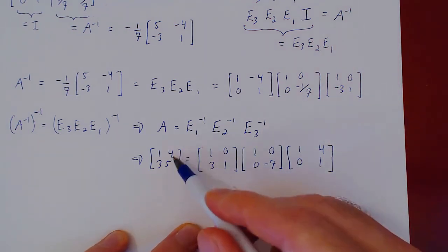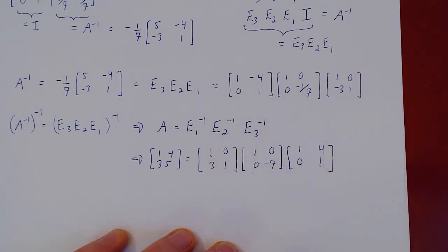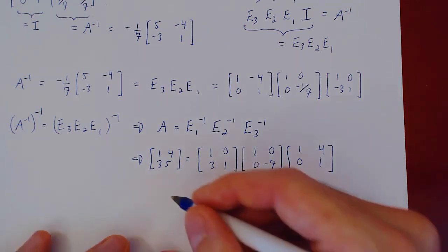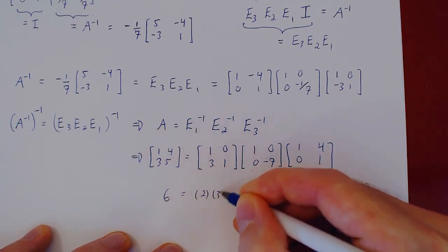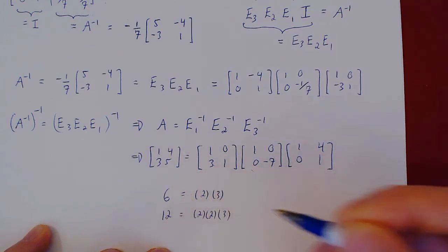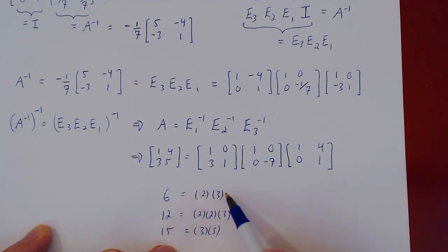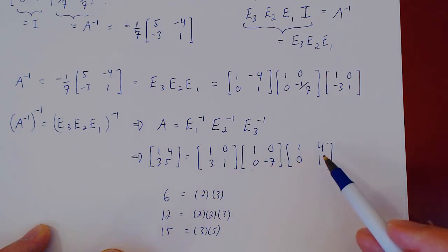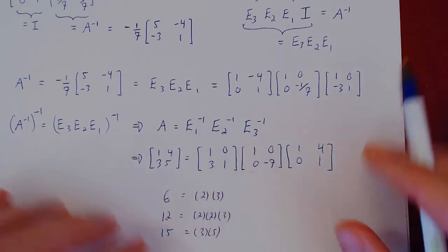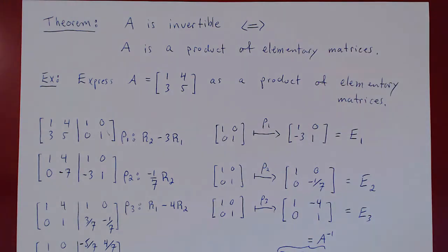So A = [[1, 4], [3, 5]] equals E1 inverse times E2 inverse times E3 inverse, and we have decomposed A as a product of elementary matrices. Just as 6 = 2 × 3, or 12 = 2 × 2 × 3, or 15 = 3 × 5, where the prime numbers are the building blocks for integers, elementary matrices are the building blocks for invertible matrices — because a matrix is invertible if and only if it is a product of elementary matrices.